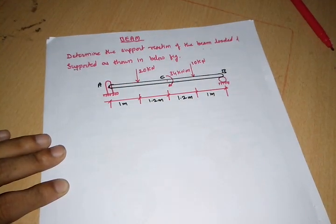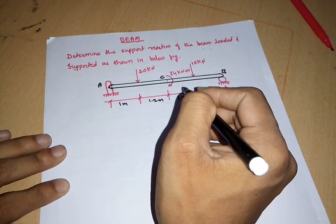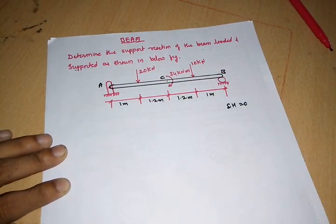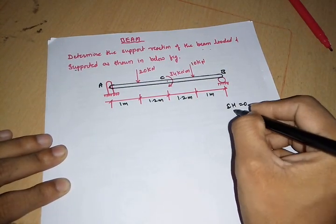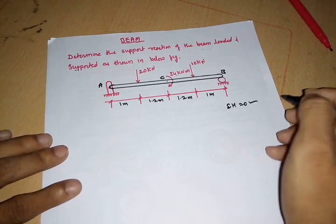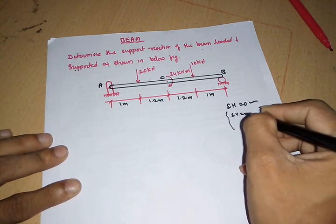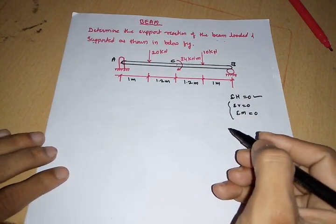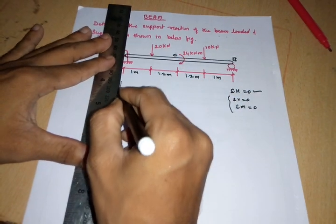First, we have to identify the type of loadings. Here both loads are point loads and perfectly vertical, so the summation of H equals zero — meaning there is no horizontal reaction. Then we use the remaining two equilibrium equations: summation of V equals zero, and summation of moment at any point equals zero. Now we draw the free body diagram, placing dotted vertical lines wherever support reactions and forces are acting.